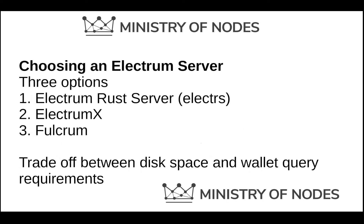There are three options. The first most common one is the Electrum Rust server. The second one is ElectrumX. And the third one is Fulcrum. It's a trade-off between disk space and wallet query requirements. The Electrum Rust server has a very small footprint, which is a pro. But if you were to query a wallet that is very deep into its keychain — meaning you're using hundreds or thousands of addresses — it may struggle to give you an output in a decent amount of time.